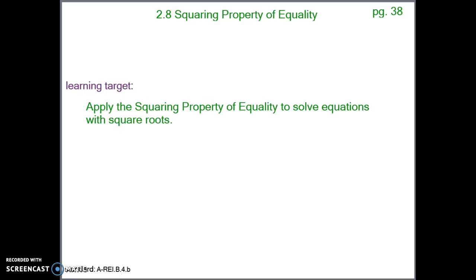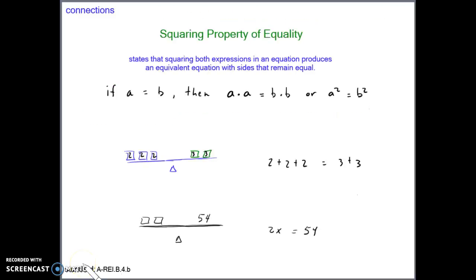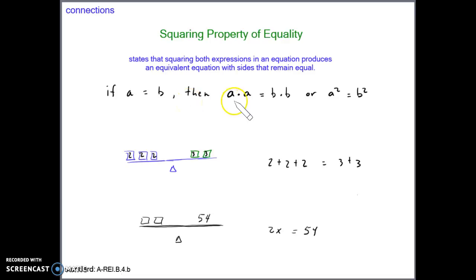The Squaring Property of Equality states that squaring both expressions in an equation produces an equivalent equation with sides that remain equal. So if we have the expression A equaling the expression B, then if we square both sides — multiply both sides by itself — we get A times A equals B times B, or A squared equals B squared.